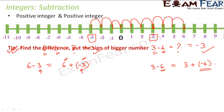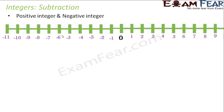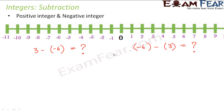So let's talk about subtraction of a positive integer and a negative integer. Let's say 3 minus minus 6 — what would that be? So you are subtracting a negative number, which is like removing negative habits from your life — the right thing to do. So you were at 3 and you are going to move towards right, 6 jumps. So you are reaching at 9. Therefore, the result would be 9.